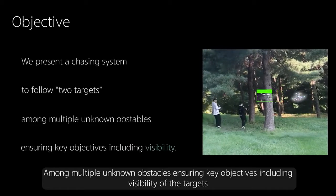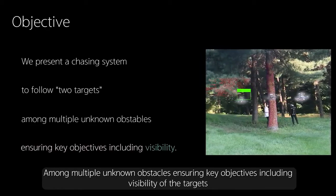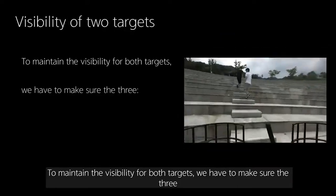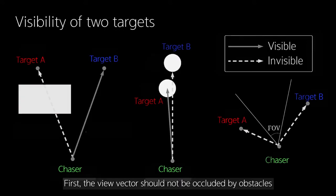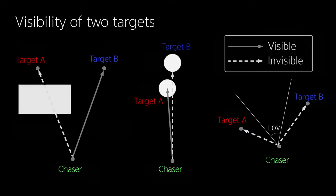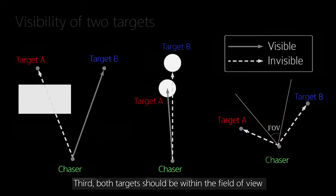Among multiple unknown obstacles, ensuring key objectives including visibility of the targets. To maintain the visibility for both targets, we have to make sure of three things. First, the view vector should not be occluded by obstacles. Second, one target should not occlude the other. Third, both targets should be within the field of view.